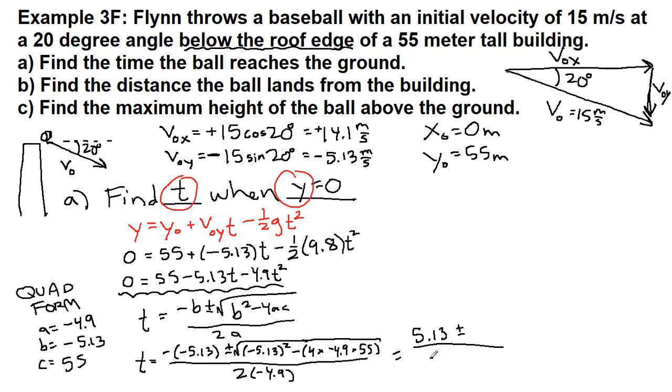2 times negative 4.9 is negative 9.8. All of that stuff underneath the parentheses or underneath the square root, when we take care of the minus signs and the square root, that whole term becomes 33.2.